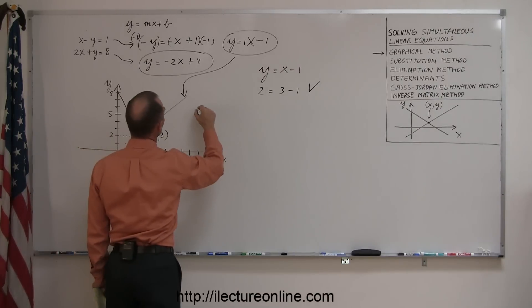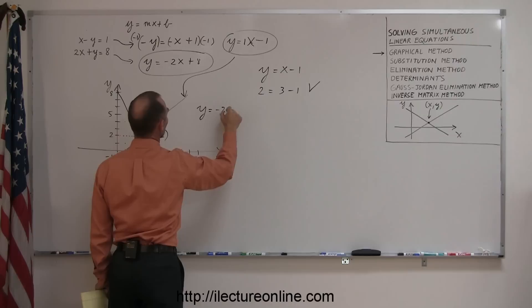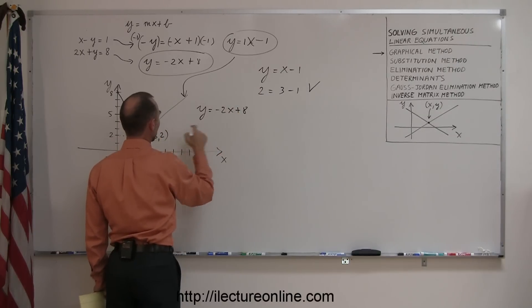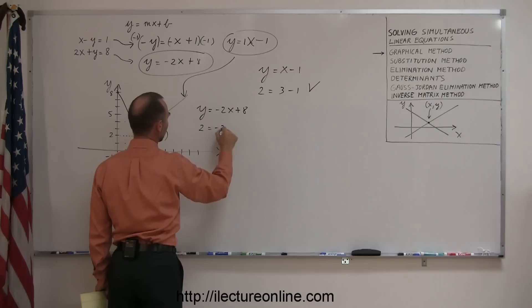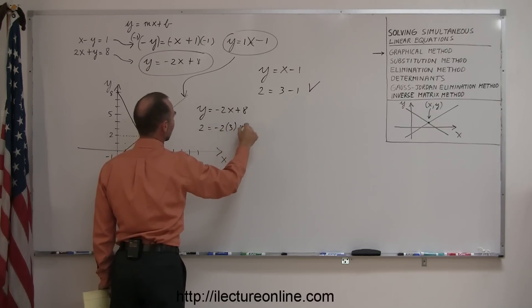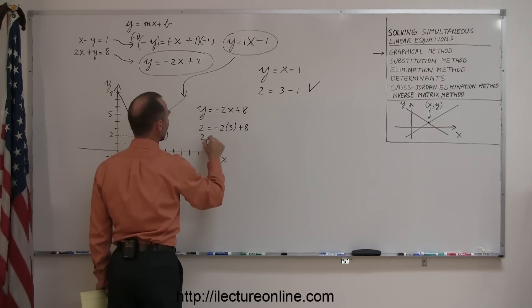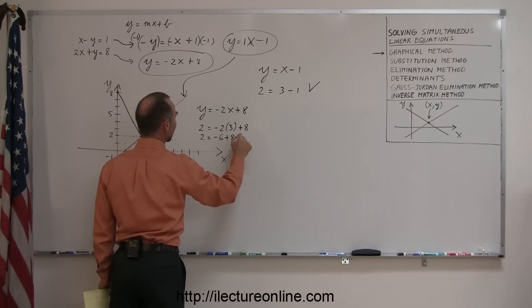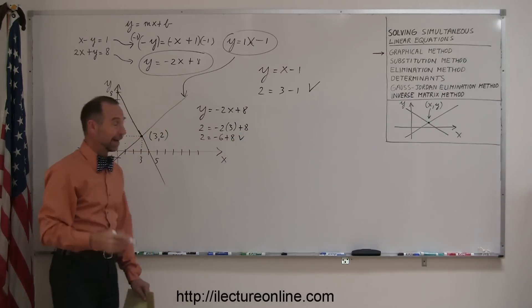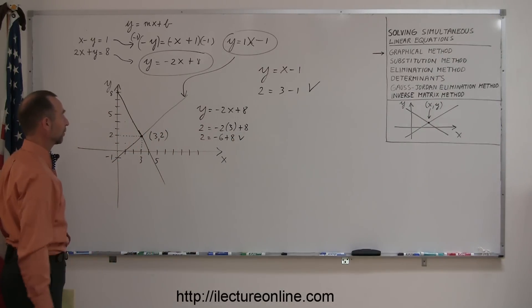Taking my second equation, y equals minus 2x plus 8. If I plug in 3 for x and 2 for y, so 2 equals minus 2 times 3 plus 8. So 2 equals minus 6 plus 8. And that looks correct as well. And so it looks like in this case, I found the correct answers.